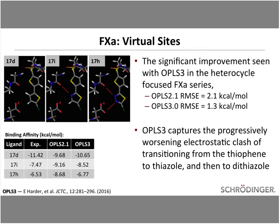This force field work allows capturing of subtle SAR elements difficult to capture otherwise. For example, three factor Xa inhibitors binding to the S1 pocket: experimentally molecule 17D is a much tighter binder than 17H, but OPLS2 had trouble capturing the degree of drop-off. With the introduction of virtual sites for aromatic nitrogens, we correctly capture this affinity trend. The lone pairs introduce electrostatic clash between the ligand and the protein — very hard to capture unless those lone pairs are explicitly represented.